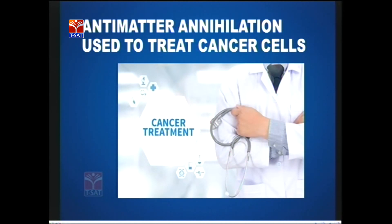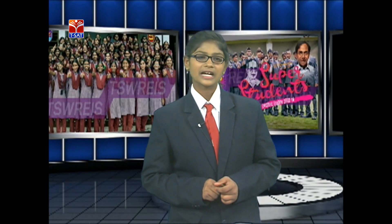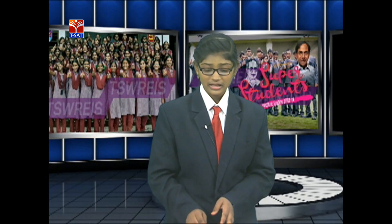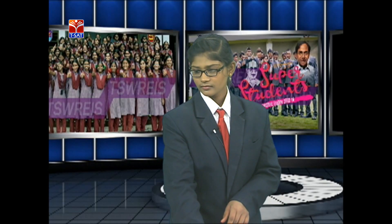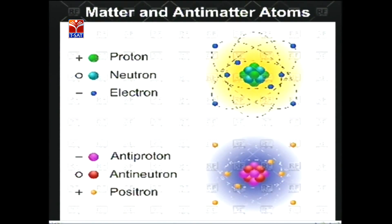Not only matter matters — antimatter also matters. We have learned today what is matter, what is antimatter, and also about the Higgs boson particle. Matter means the thing which occupies space and has mass. Antimatter is a thing which is totally opposite to matter. For example, if we take a proton, then in antimatter it will become an anti-proton.